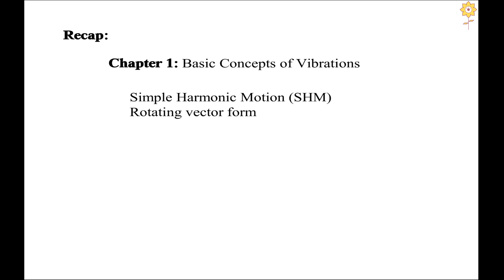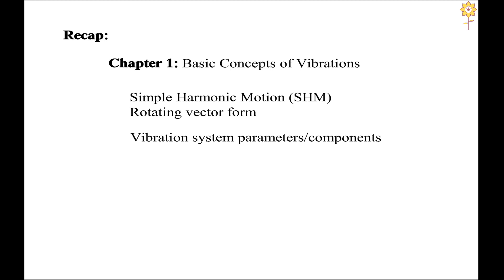This will be useful in the chapter on forced vibration when we create the force vector polygon. We also saw the three basic components of a vibration system, out of which the mass and the spring are compulsorily required for causing vibration — if we remove either one, we do not have vibration. The third component is the damper, which dissipates energy in the form of heat, thereby reducing the amplitude of motion.